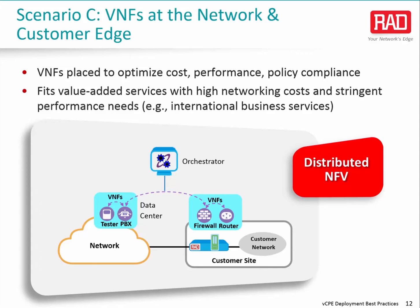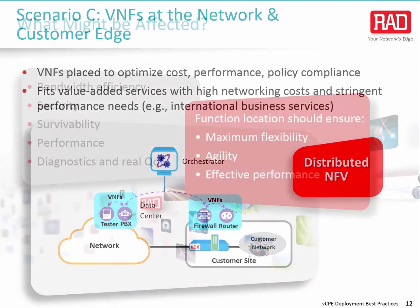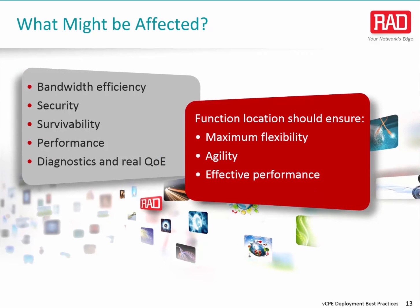Placing at least some virtualized functionality at the customer location is a reasonable solution to avoid bandwidth inefficiency and degradation in application performance. Function relocation may have unintended effects on various aspects of service quality. First, service providers should consider the bandwidth cost of moving functionality deeper into the network. Excess bandwidth requirements could have a critical effect on service delivery in areas still served by relatively low-speed connections, such as DSL. Next, there is the issue of security: does moving the VNF to the network expose sensitive end-user data? For example, an encryption application located anywhere but the customer premises doesn't provide adequate protection because traffic can be intercepted in an unsecure access segment. In addition, critical functions must remain operative even when the access link is down. Hosting IP PBX or router functions at the PE or data center would result in an inability to locally place calls or deliver traffic in case of network failure.